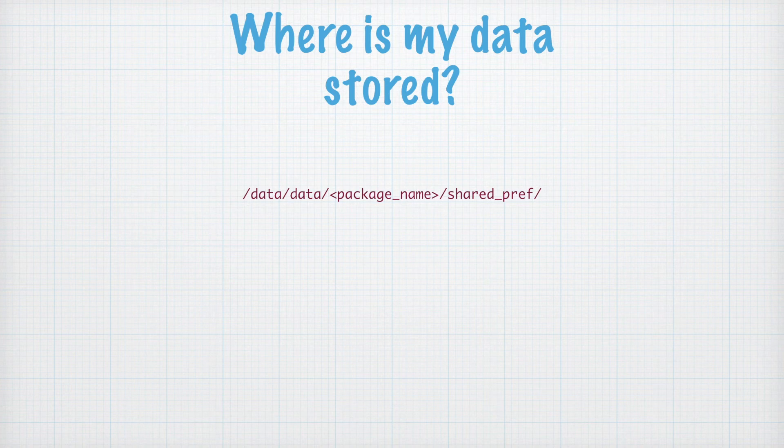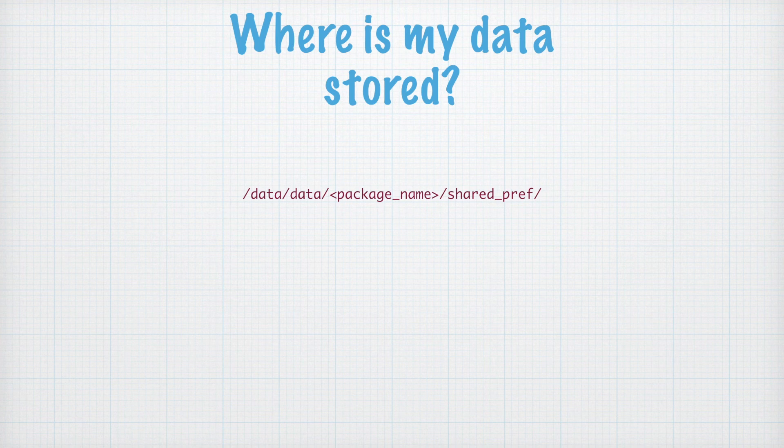Our data will be stored at data/data/package_name/shared_prefs. We will look at this in detail when we create an example. That's it for this first tutorial explaining shared preferences — in the second video we will see an example covering shared preferences in detail.